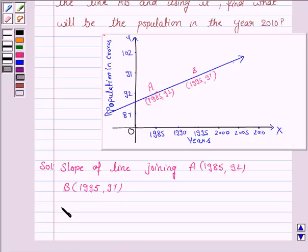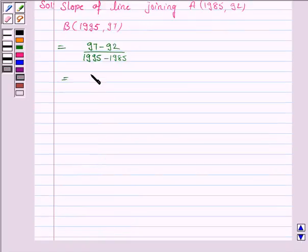It is given by Y2 minus Y1, that is 97 minus 92, upon X2 minus X1, that is 1995 minus 1985, and it is equal to 5 upon 10, that is 1 upon 2.